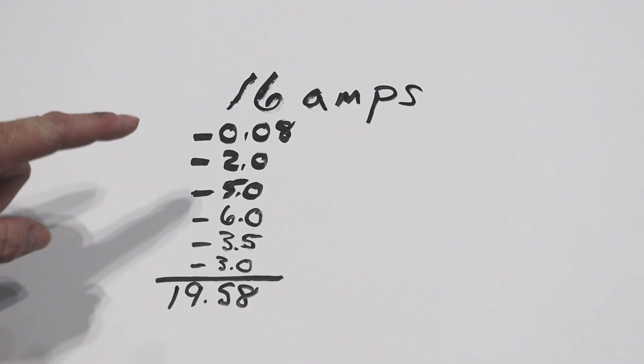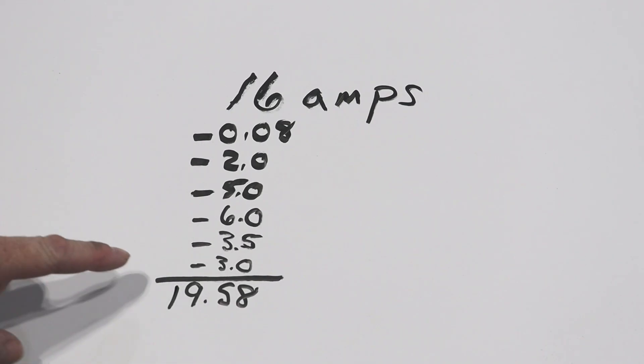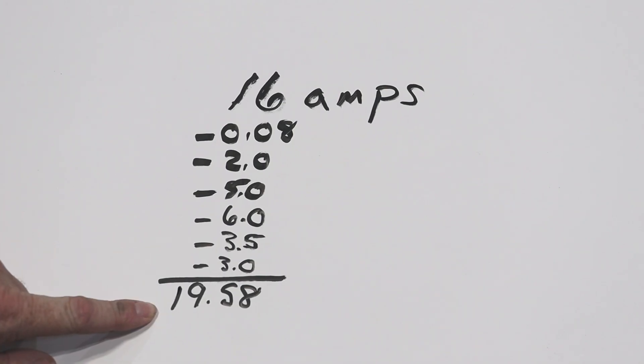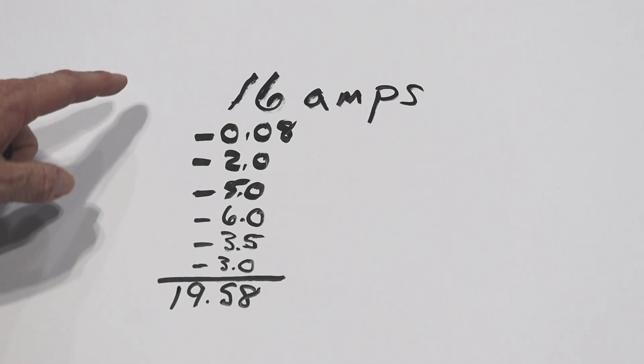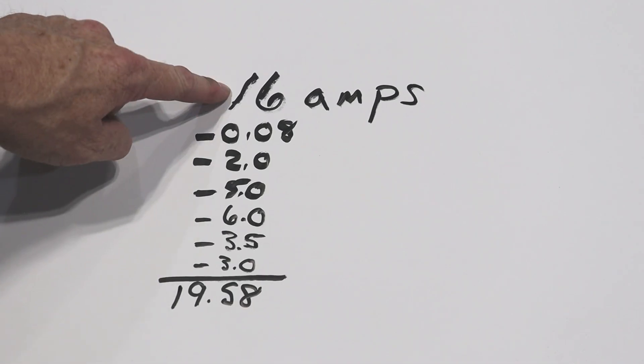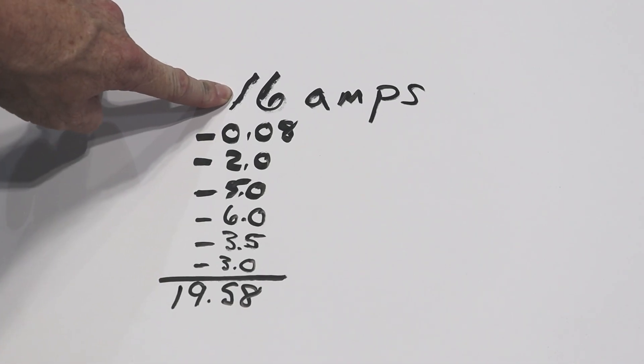You have everybody over for a party and you get all this stuff going and all of a sudden you're drawing 19.5 amps. So at some point before all this stuff gets wound up you've already tripped your breaker because you only have 16 amps on the circuit.